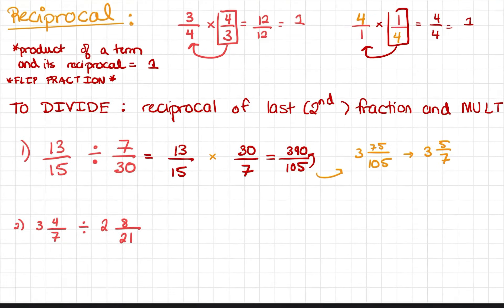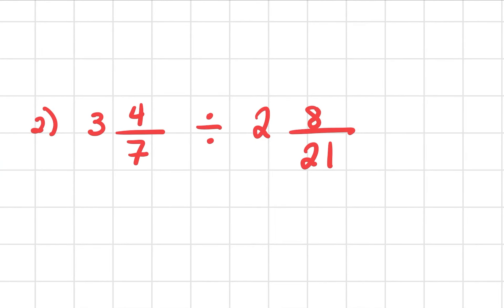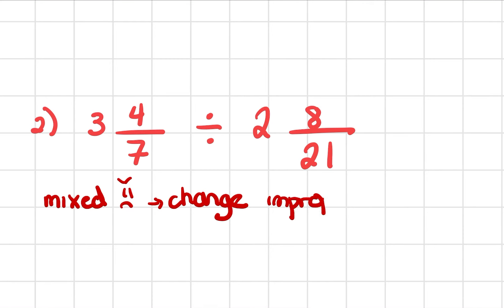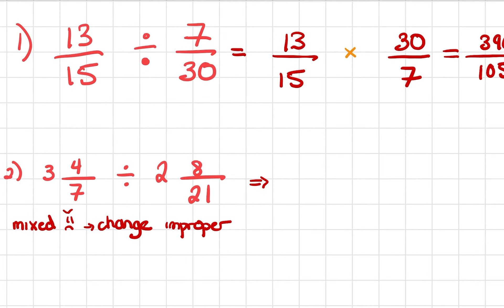Now we're going to go into our final example for this lesson, where I've given you mixed fractions — which we're not allowed to have for multiplying and dividing. So we're going to change them to improper. I'm still dividing, so I would get something like 25 over 7 divided by 50 over 21, after changing my mixed fractions to improper fractions.